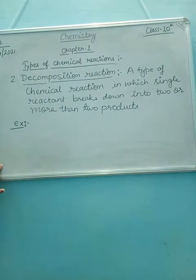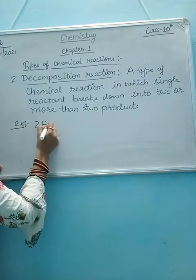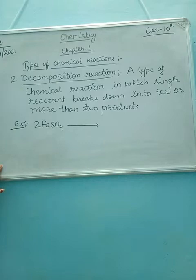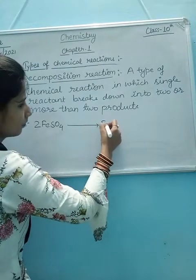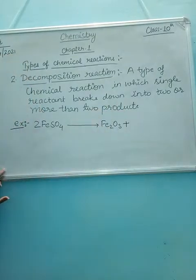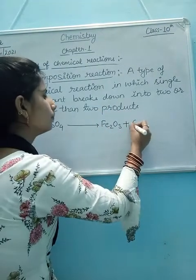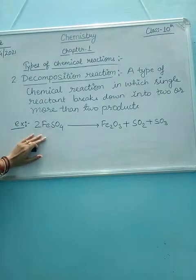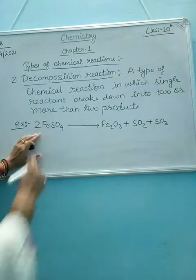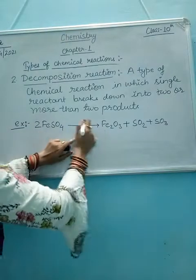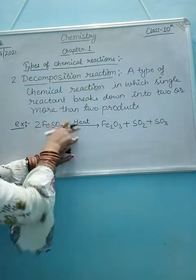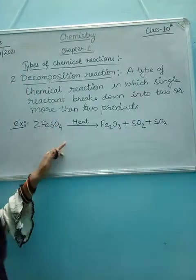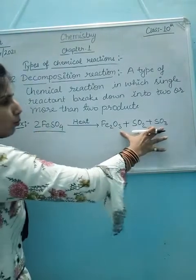Example: ferrous sulfate breaks down into ferric oxide, sulfur dioxide, and sulfur trioxide. This is the example of decomposition reaction. In this reaction, ferrous sulfate breaks down in the presence of heat into ferric oxide, sulfur dioxide, and sulfur trioxide — a single reactant breaks down into two or more than two products.